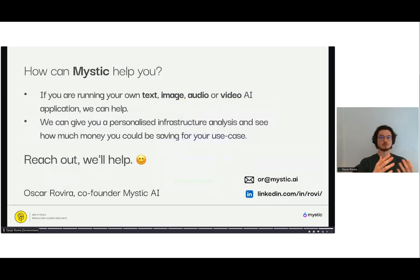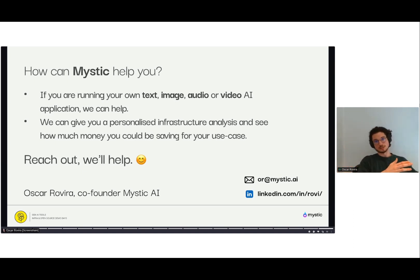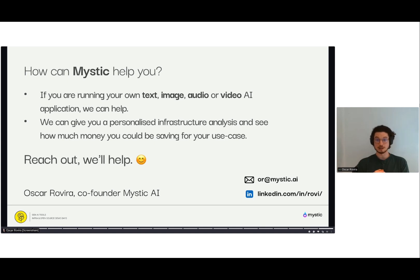So how can we help you? If you're running your own text, image, audio, or video AI application, Mystic can probably help. Many companies run open source or fine-tuned models and want an API without spending time on engineering infrastructure. You can have your application up and running within a week, and we can do a cost analysis showing how much you're currently spending and how much you could save with us as part of the onboarding process. Please do reach out on my email or on my LinkedIn — I'll be happy to help answer any questions or show you a demo of the platform. Thank you so much for listening.